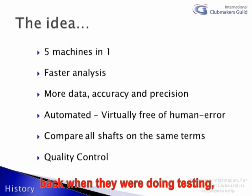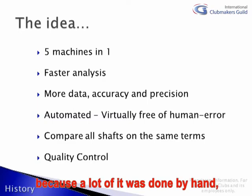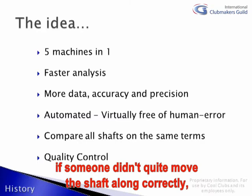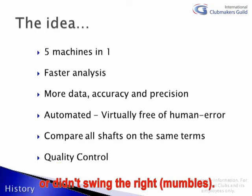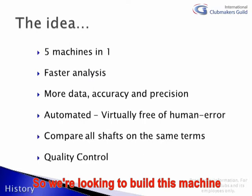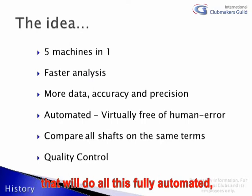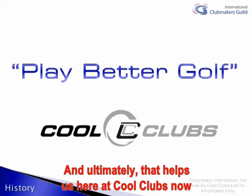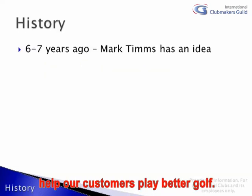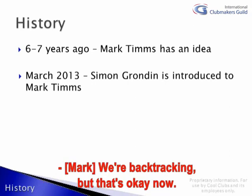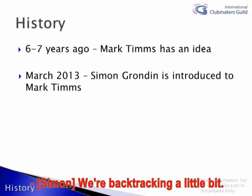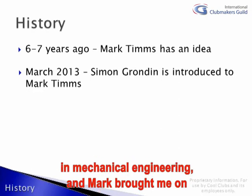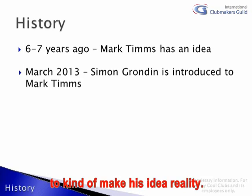So as Mark said, back when they were doing testing it took almost an hour to do a shaft, because a lot of it was done by hand — there was room for human error. Someone didn't quite move the shaft along correctly or didn't slide to the right plant length. So we were really looking to build a machine that would do all this fully automated and let us compare all the shafts in the same terms. And ultimately that helps us here at Cool Clubs help our customers play better.